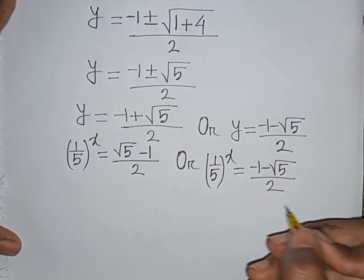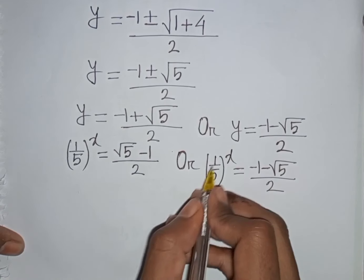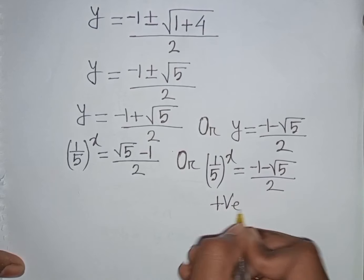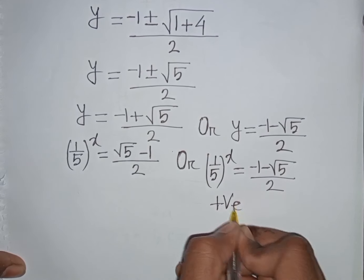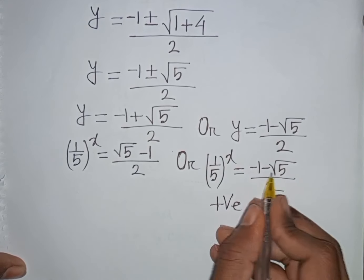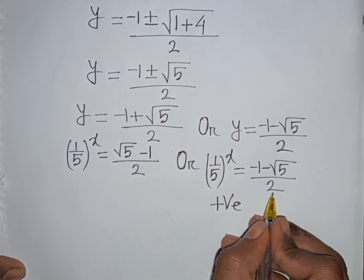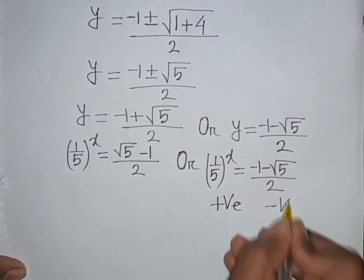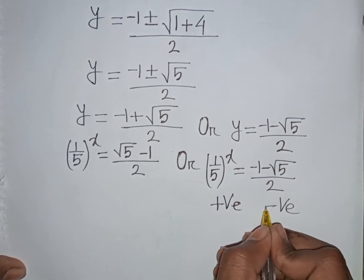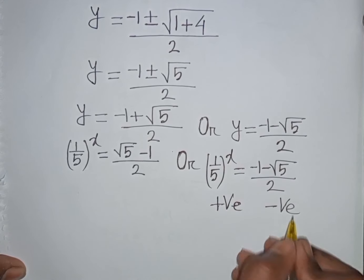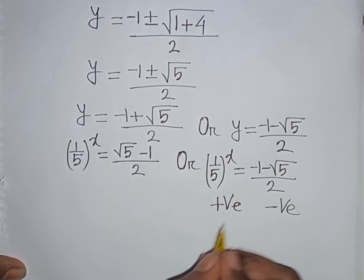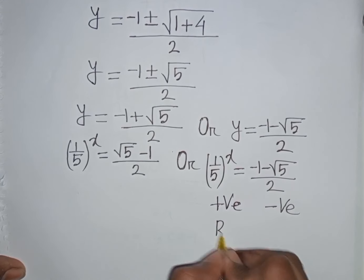We see that (1/5) to any power is always positive, but (−1 − √5) / 2 is negative. Since a positive value cannot equal a negative value, this solution is rejected.